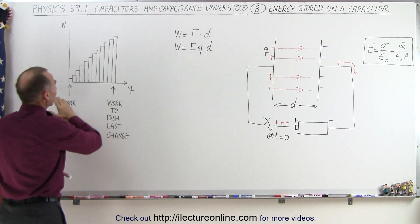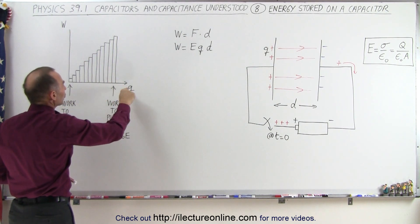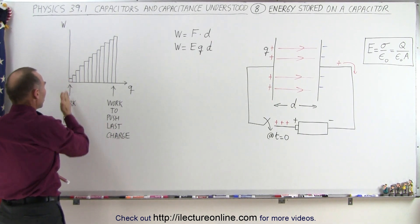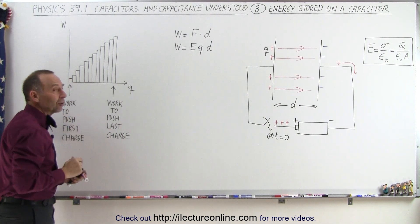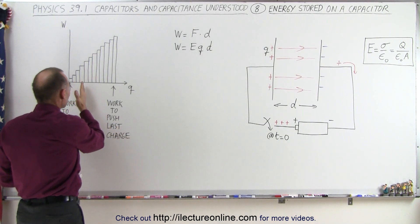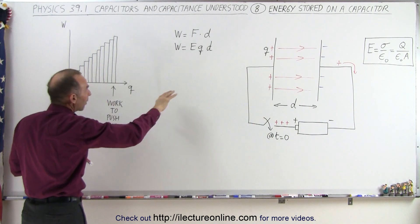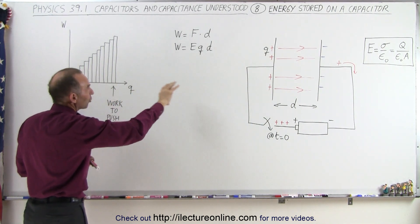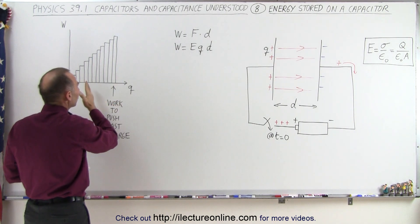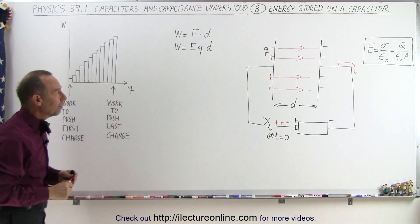Here we have a graphic of that — the amount of work done by putting charges onto the capacitor plate. For the first one, the amount of work is minute because the electric field is basically zero, but then as you put more and more charge on there, the electric field becomes stronger and stronger. It requires more and more force to push charges onto the plate, more and more work needs to be done, so you can see that the amount of work increases more and more.